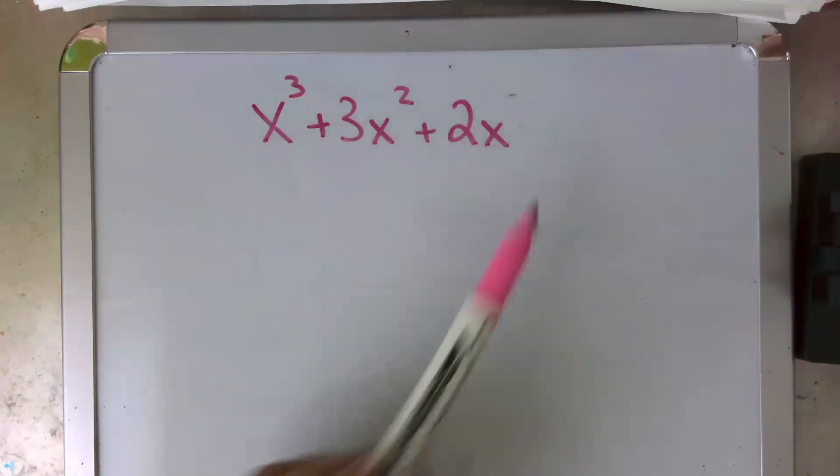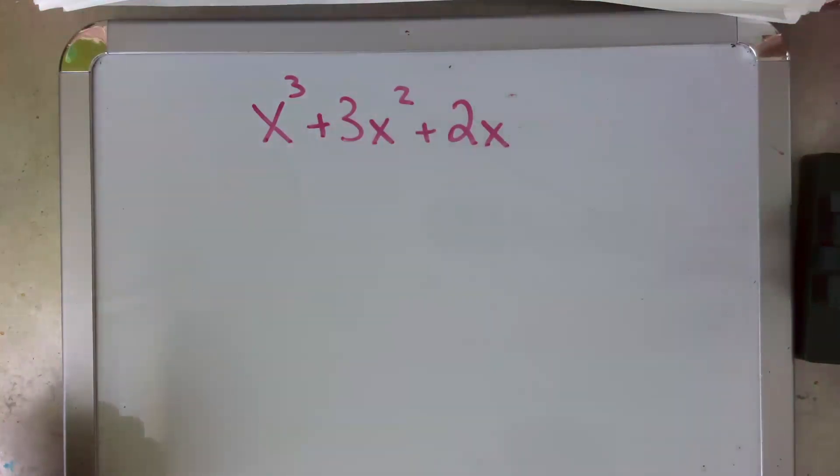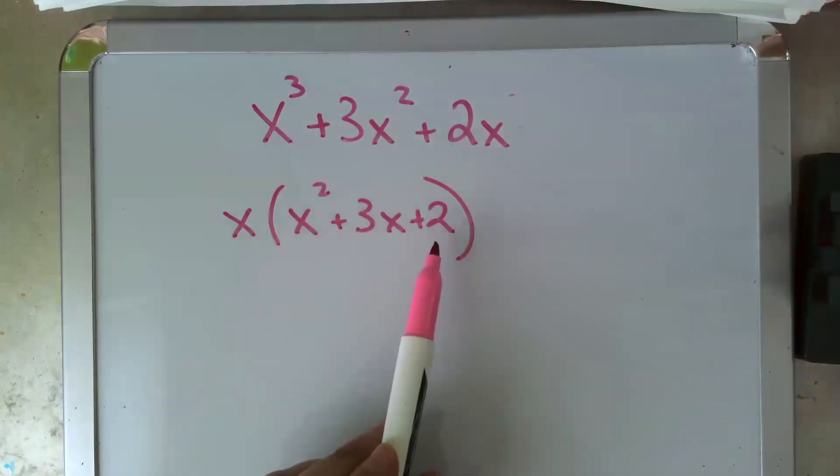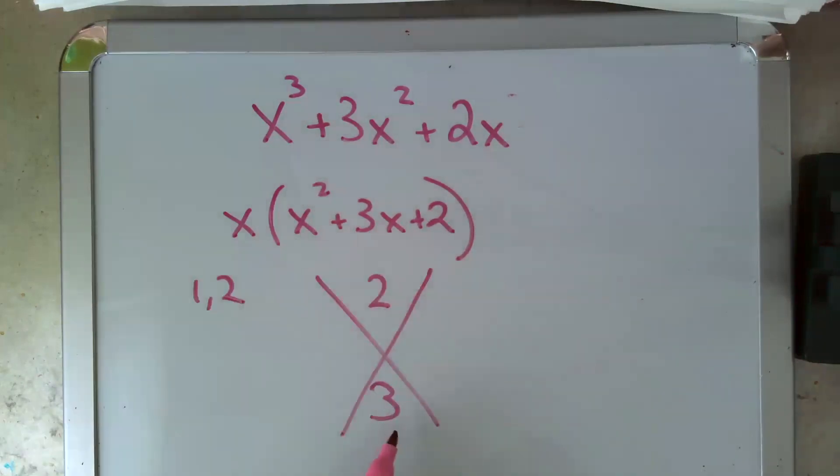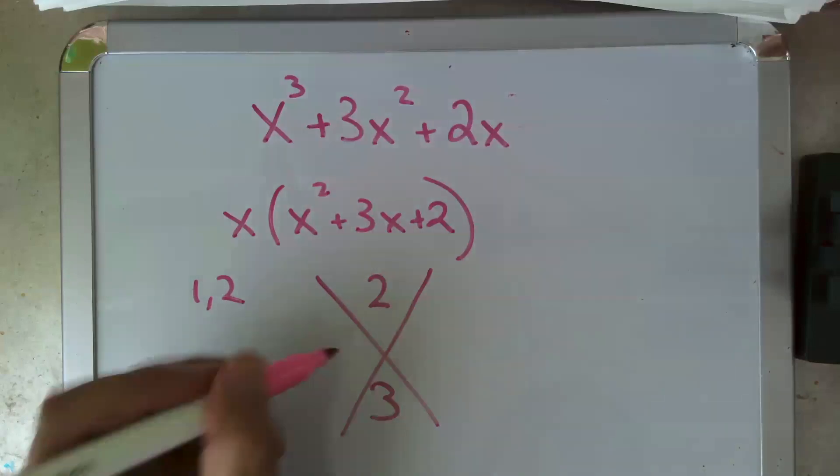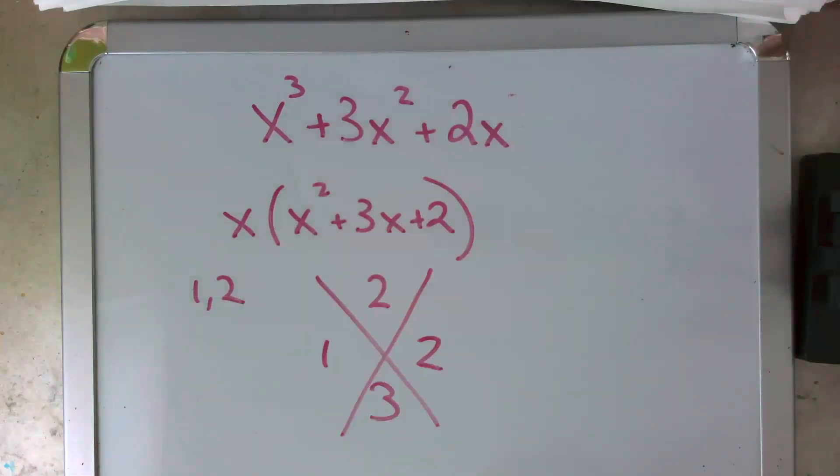But do notice that I have an x in every term. So the first thing I'm going to do is apply greatest common factor and pull that out. And lo and behold, now I actually have a legit quadratic, there's my x squared. And so now I throw that in the x method, two on top, three down below, one and two are my only factors. They're both positive. So my final factorization looks like that. And the whole thing started by pulling the greatest common factor.